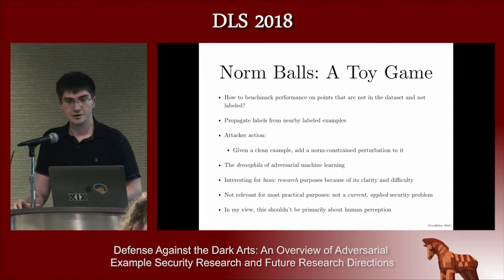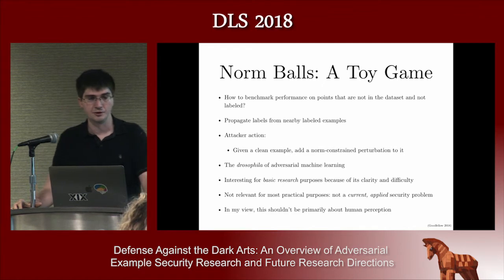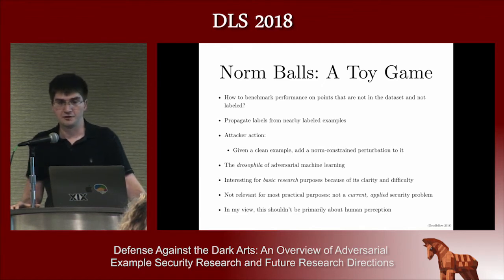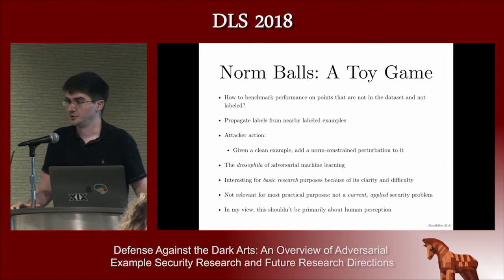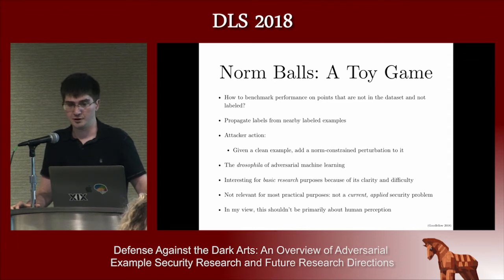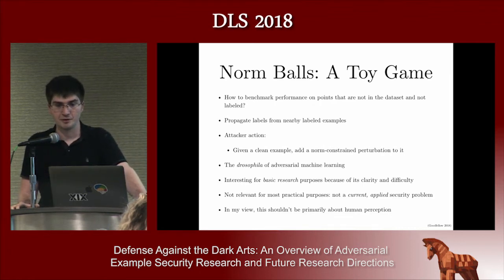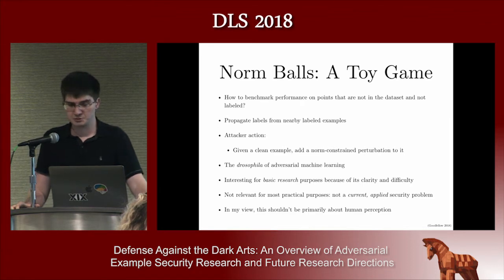Because unlabeled points aren't in the dataset, they don't already have a label we can look up. So I thought it would be easy and convenient to propagate labels from nearby points already in the dataset — basically benchmarking on as large a subset of the input domain as possible, saying any point near a test example can copy the label from that test example, using a norm to define 'near enough.'